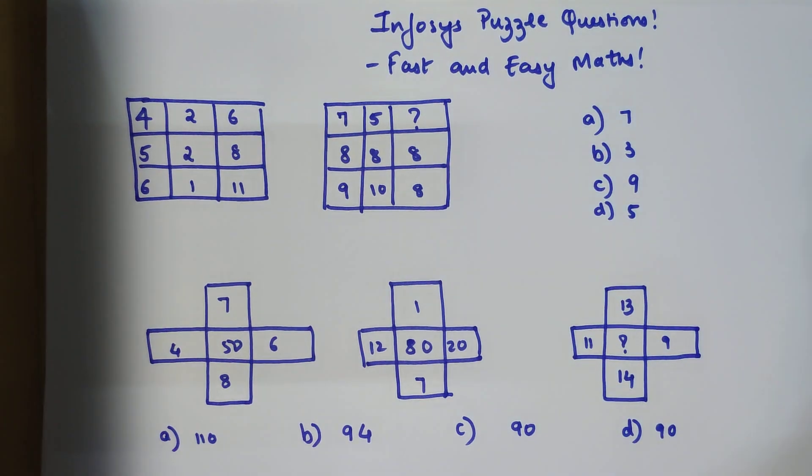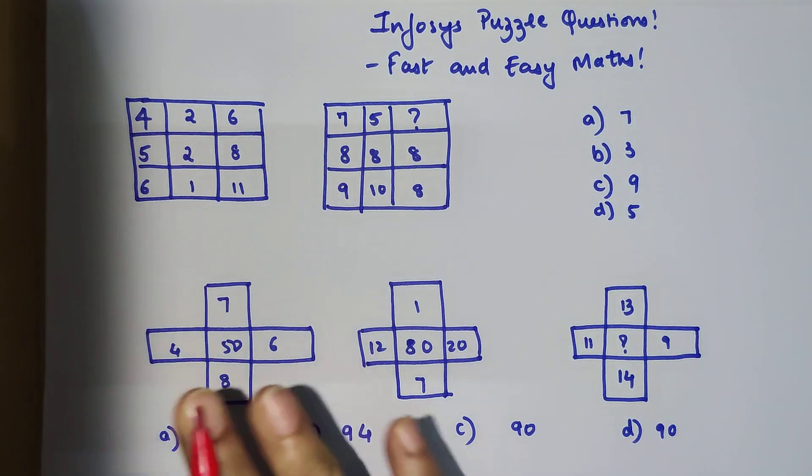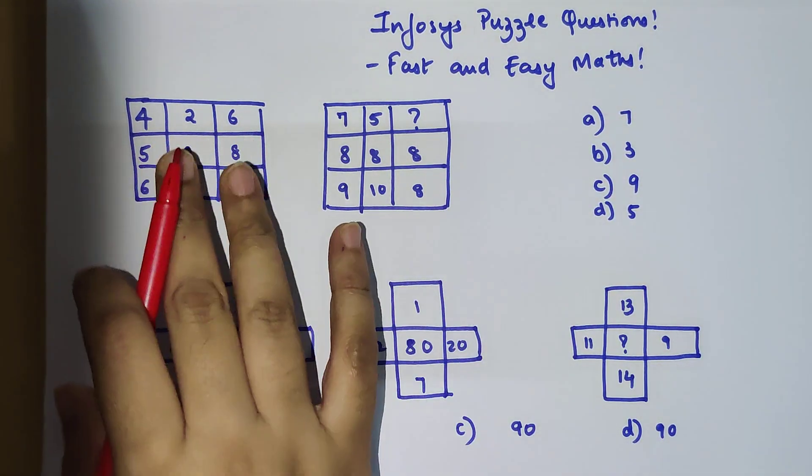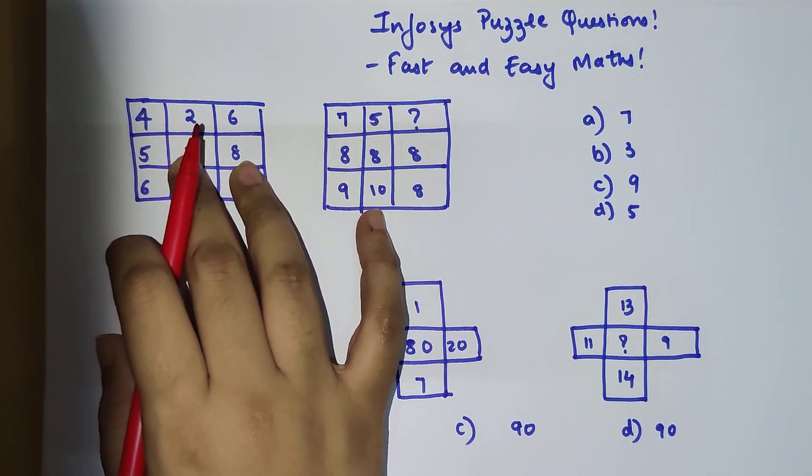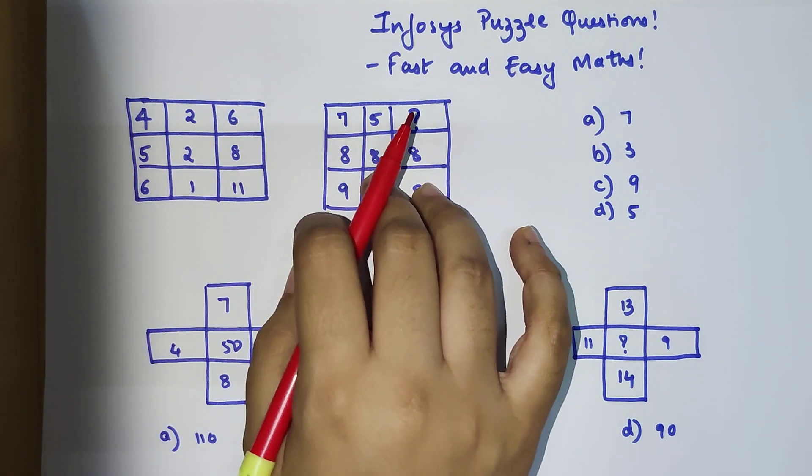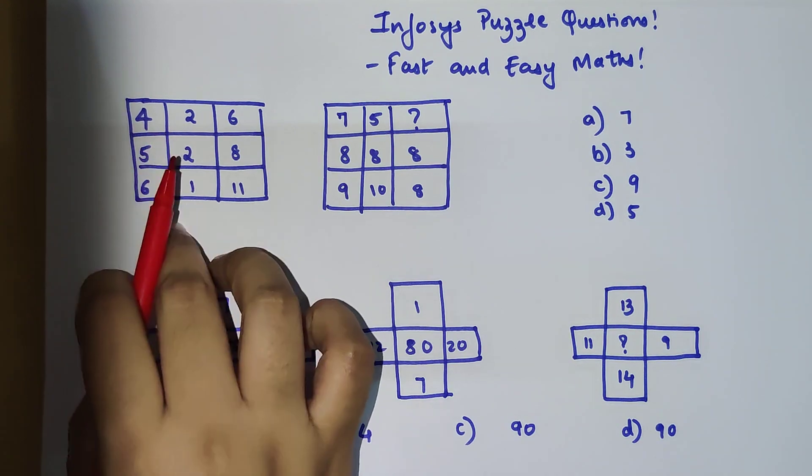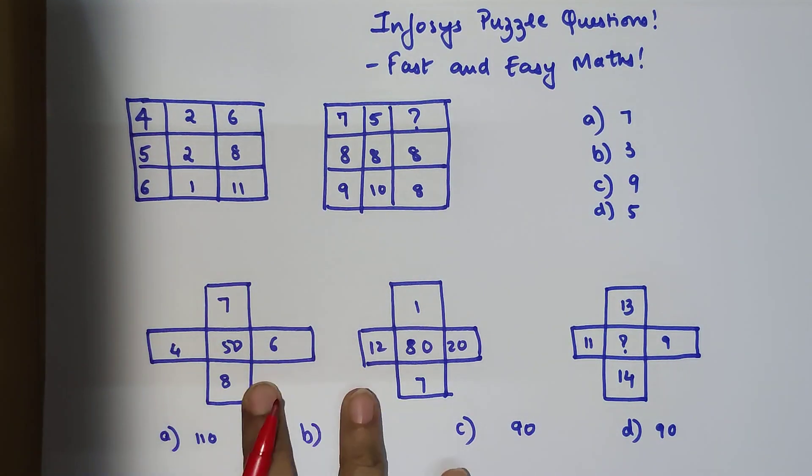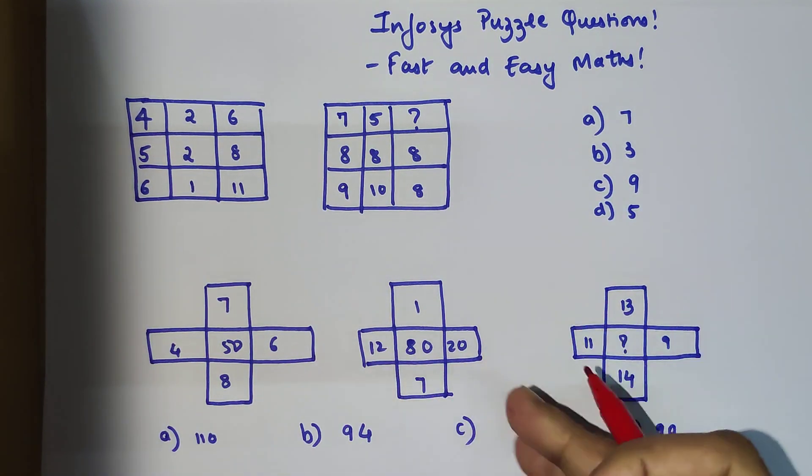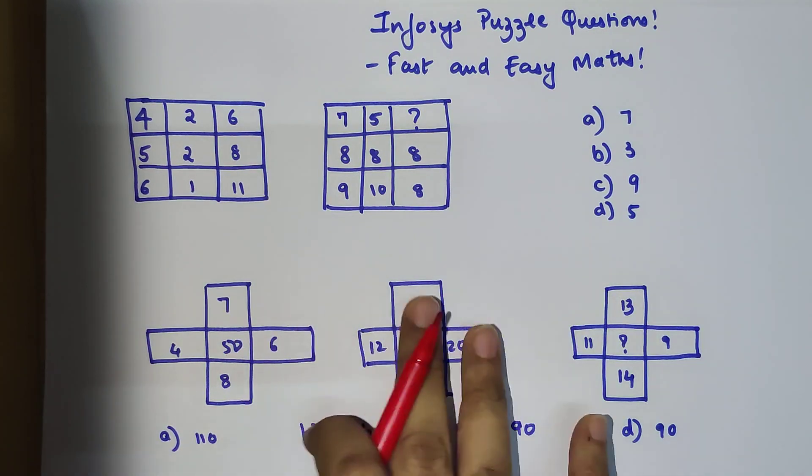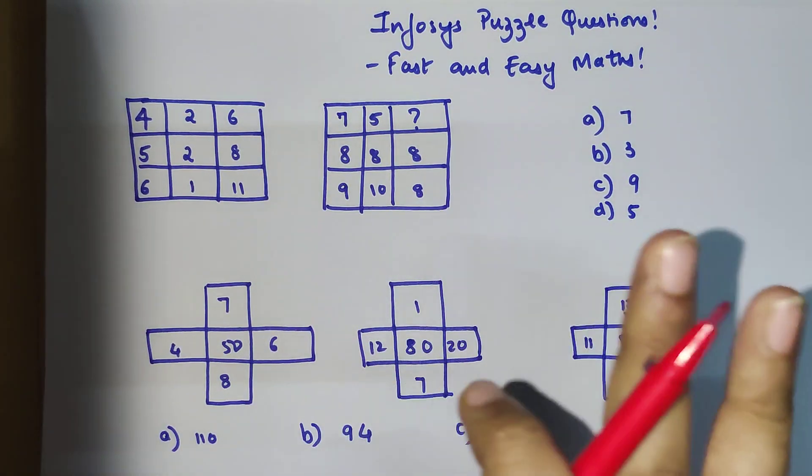The question was, they have given few sets, and you have to assume that the second set follows the same pattern as the first set. In this question, they have given you two sets and you have to assume that the third set is following the pattern of the first two sets.